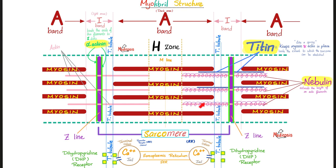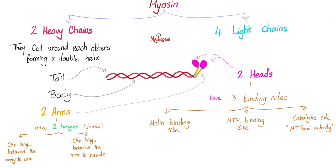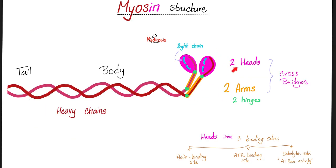Actin slides over myosin — that's your contraction. When you contract, the I-band shortens, the A-band does not change, the H-zone shortens, and the entire sarcomere and muscle shorten — if we're talking about isotonic contraction. Myosin has heavy chains, light chains, and cross bridges. The cross bridges have two arms and two heads. The heads have three binding sites: for actin, for ATP, and for ATPase.